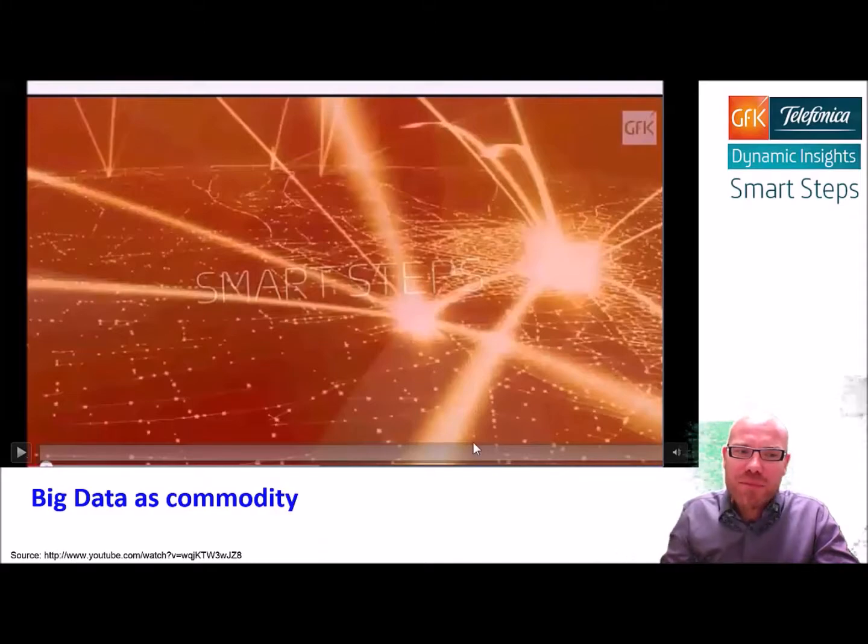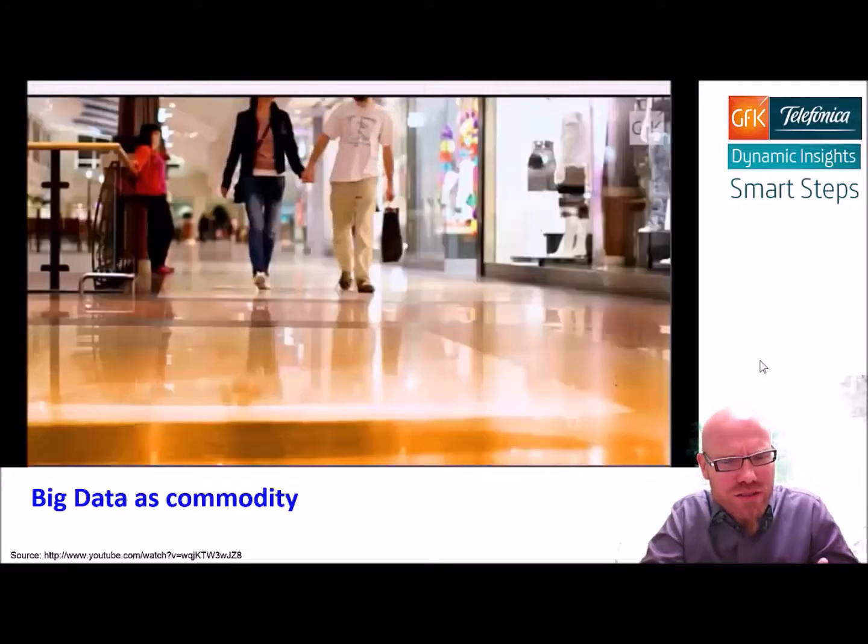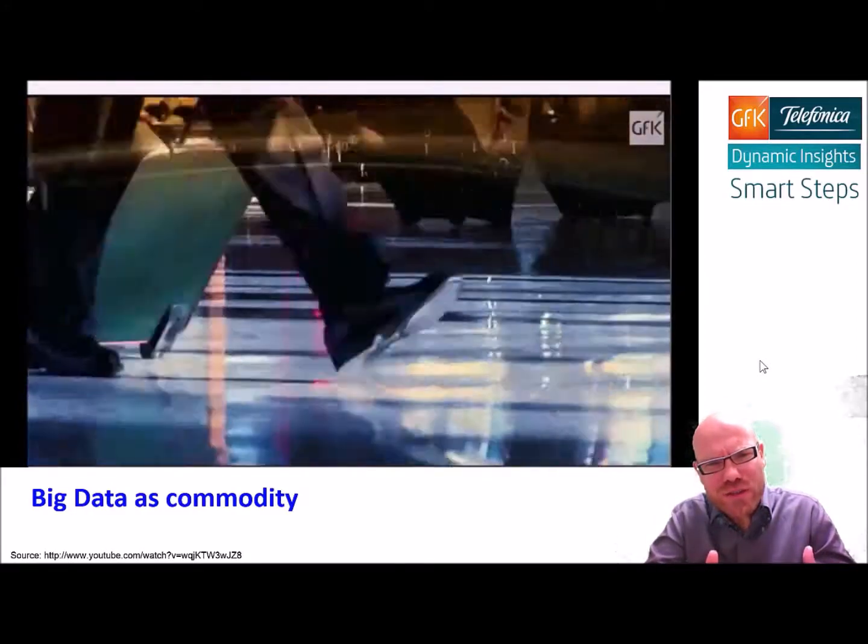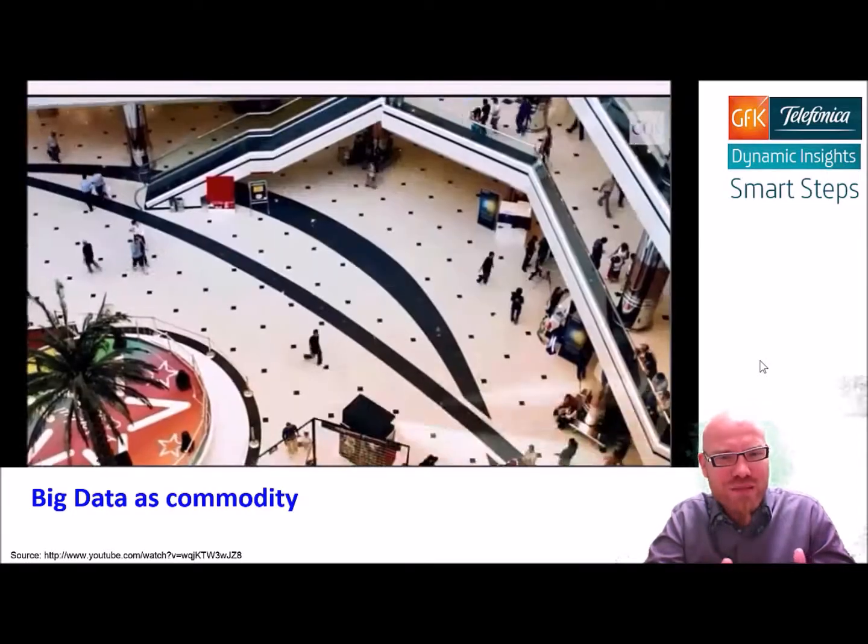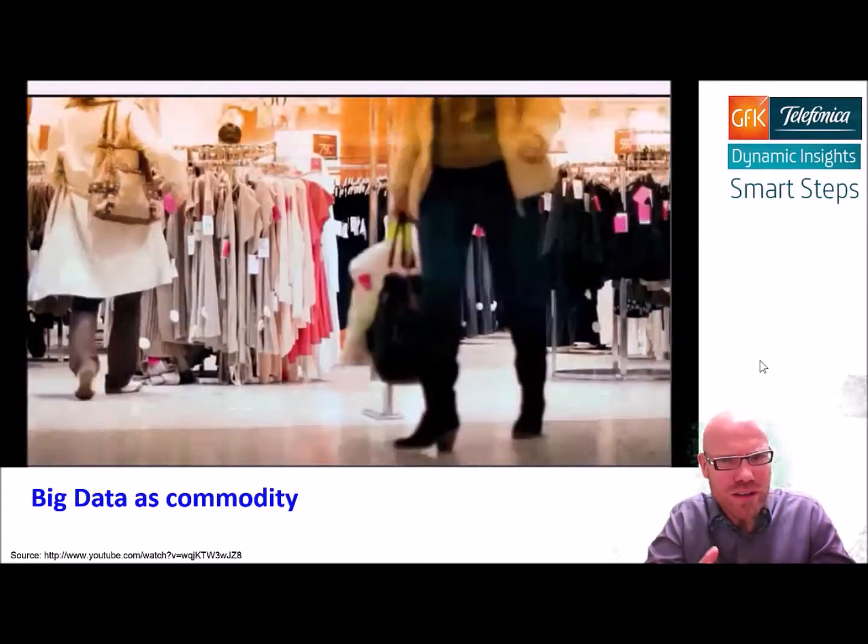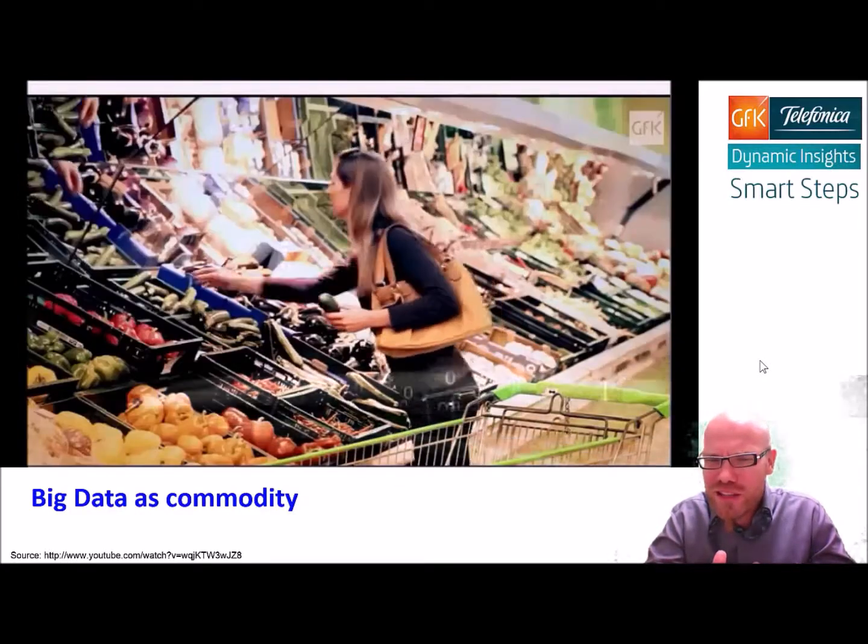Another example are mobile phones. Mobile phones track every second where we are. So mobile phone companies are increasingly converting themselves into data providers because they know where you are. They also know who you are. They know because they ask you before you bought your phone certain information about yourself.